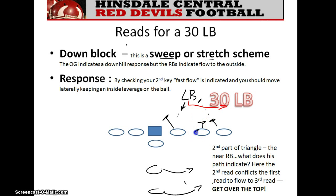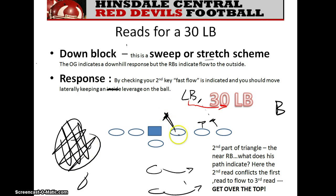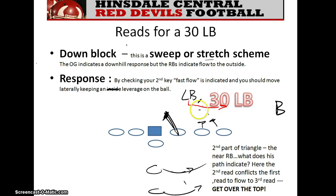Your third read is the next guy who can block you — this tackle right here. These two are probably working a combination on the down lineman. This is a down block with fast flow, and the third read confirms the sweep or stretch scheme, particularly if you see the ball pitched to the tailback — you should be over the top with fast flow to the outside. You want outside leverage, pursuing the football. If you run straight through the gap, the ball will be gone. Flow with the football to the outside. This is a good example of what we mean by conflicting reads — down block and lateral flow require going to your third read.